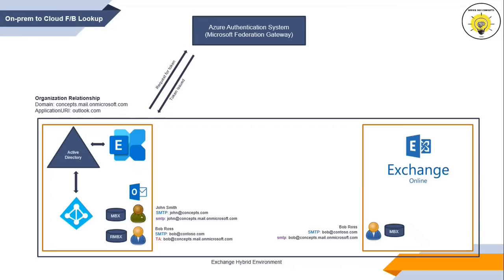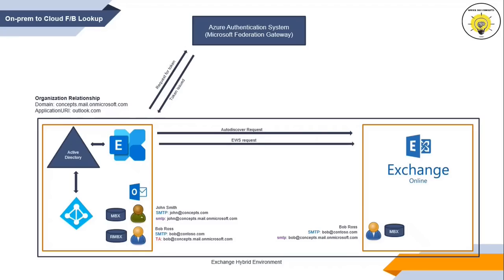When Exchange Server receives the token, it will send an auto-discover request to Exchange Online, sent to the URL mentioned within the target auto-discover EPR attribute of the organization relationship. If the auto-discover request passes, on-premise Exchange will make an EWS request to Exchange Online along with the delegation token, requesting Bob's free busy availability. Exchange Online will validate the delegation token issued by Microsoft Federation Gateway, and once verified, will return Bob's free busy information so John can see whether Bob is free or busy.